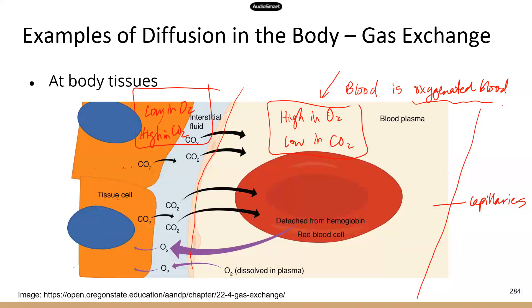So the oxygen is going to move from high to low, from red blood cells across the capillary wall, across the interstitial fluid, across the tissue cell membrane, into the cells.